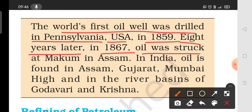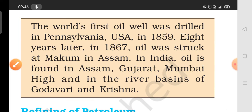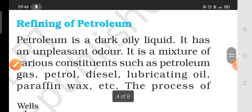Oil was first struck in Assam in India. Petroleum is found in Assam, Gujarat, Mumbai High, and in river basins of the Godavari and Krishna rivers.